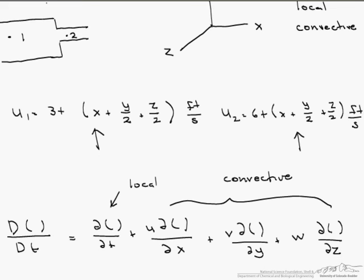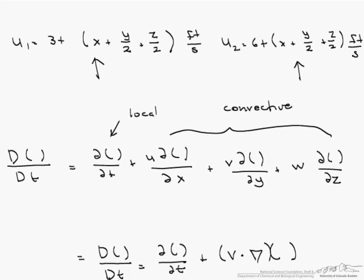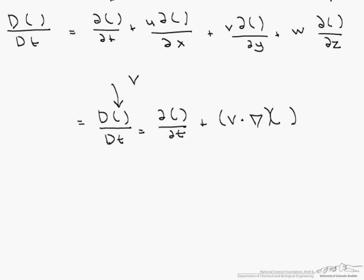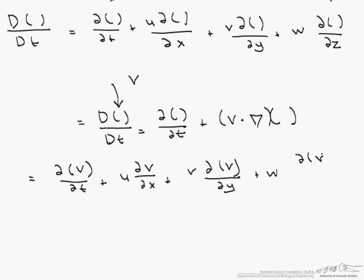We can write this in a shortcut fashion like this. To find our acceleration, we have to put in parentheses our velocity, because acceleration is the change in velocity with respect to time. We are going to find dv/dt plus u dv/dx plus v dv/dy plus w dv/dz.